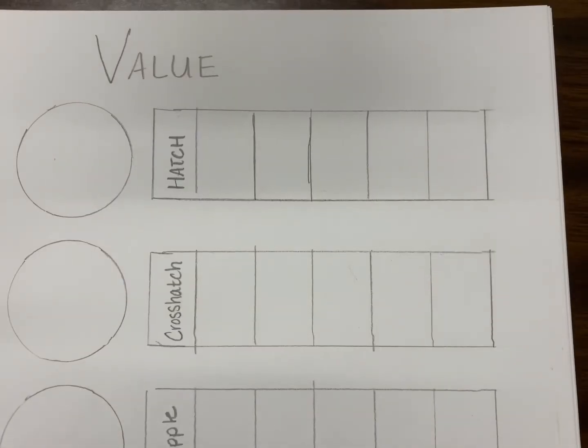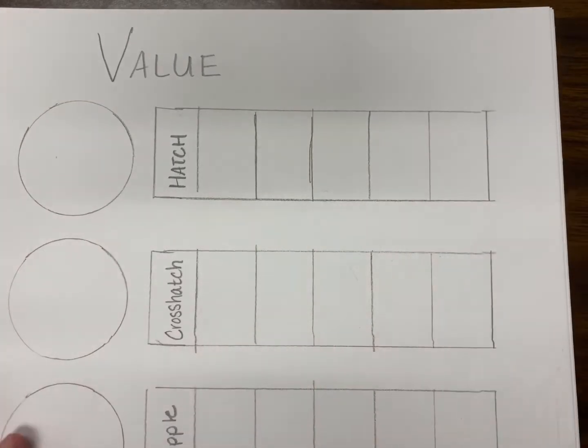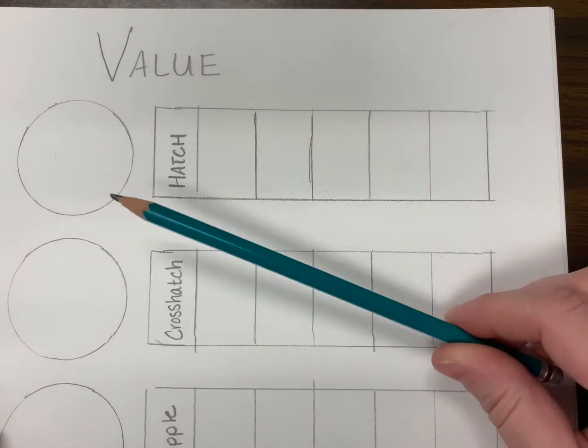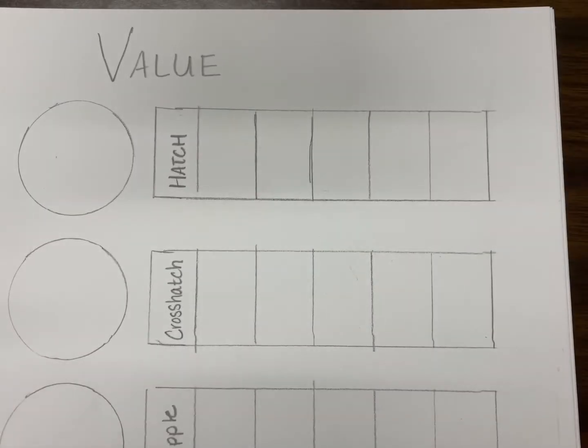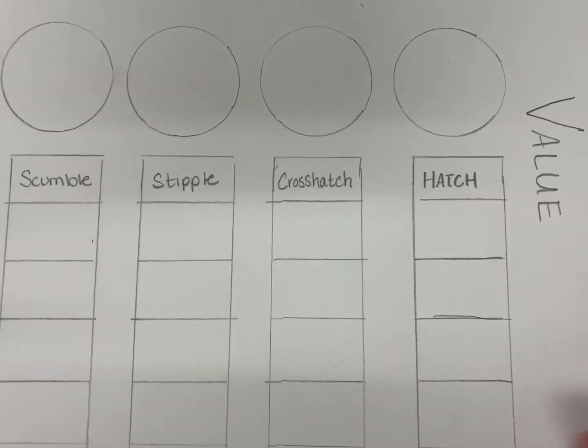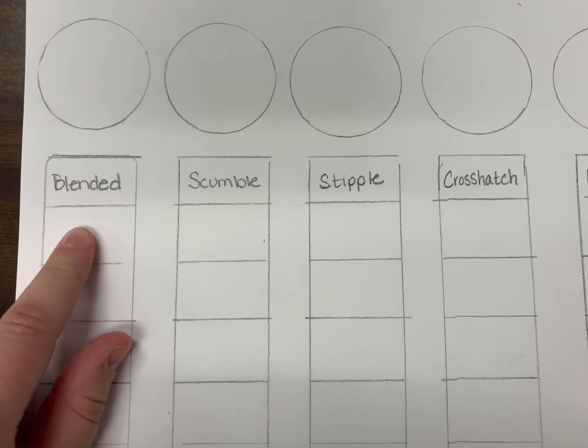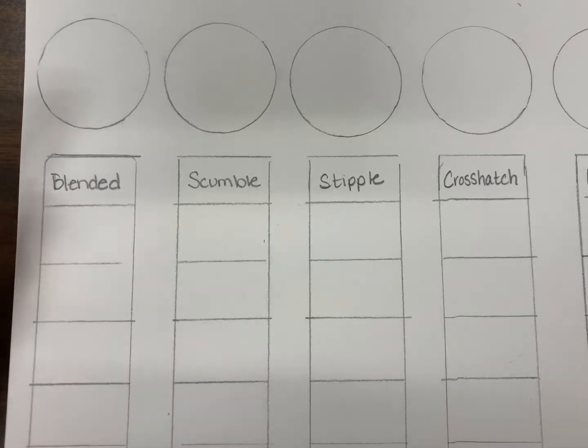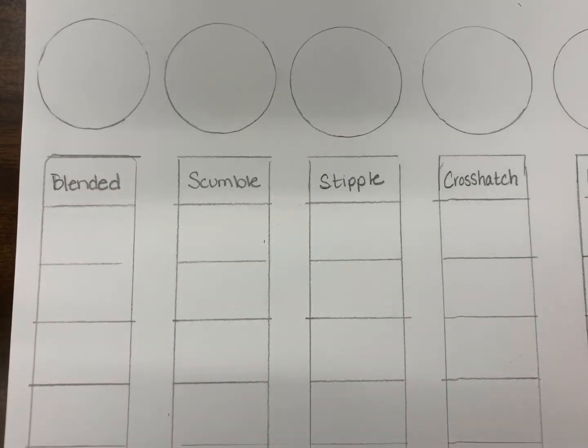So let's talk about different marks that you can make on a surface. We're going to be using graphite, but you can use other materials to make these marks. When you're applying graphite marks, there's a couple different ways that you can do that. You're probably familiar with the blended mark, meaning you put the graphite down and then you blend it out.